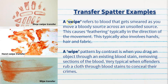A swipe refers to blood that gets smeared as you move a bloody source across an unsoiled surface, causing feathering typically in the direction of movement. This is very typical with hands, hair, and fabric. As we can see here, there are two swipe pictures — a shoe swipe transfer and a hand swipe transfer — both indicating direction of movement. A wipe pattern, by contrast, is when you drag an object through an existing blood stain, removing sections of the blood. This is typical when offenders rub a cloth through blood stains to try and conceal their crimes.